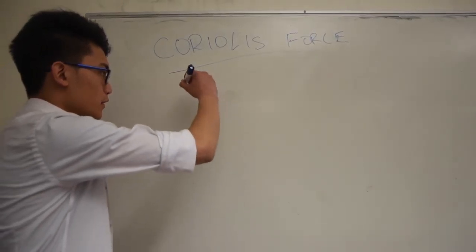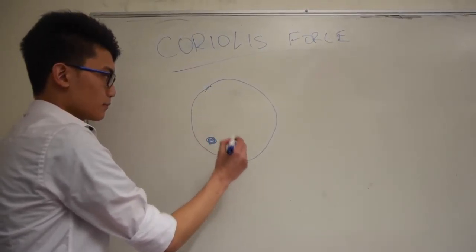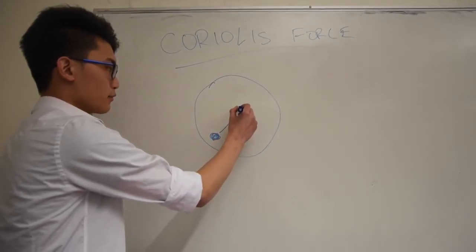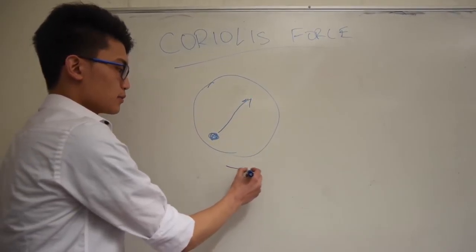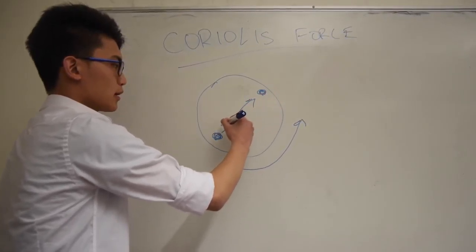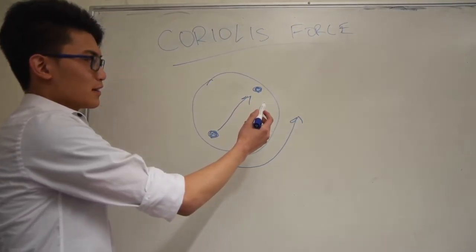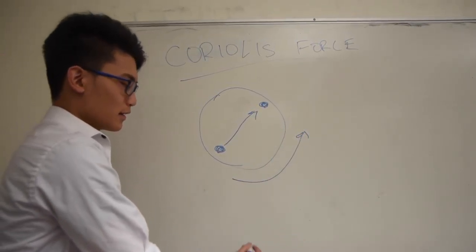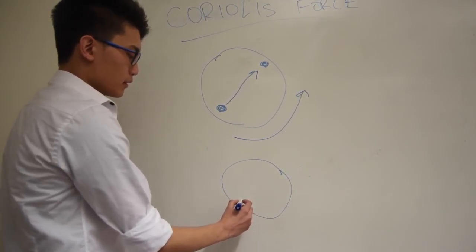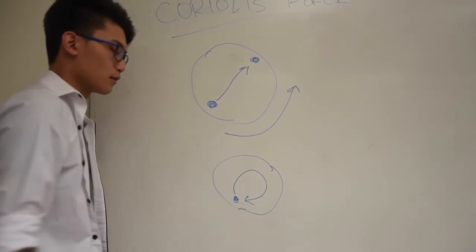Another way of understanding the Coriolis force: imagine the turntable again with a person standing on it. Viewed from above, they throw a projectile away from themselves in a straight line. If the turntable is moving fast enough, they can rotate to that point before the projectile arrives, and thus catch a projectile they threw away from themselves. In the rotating reference frame, they will see the ball going in a curved path, even though they threw it straight.